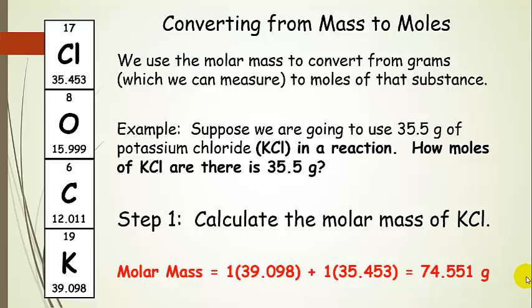Now let's convert from mass to moles — this is something we're going to do a lot of in this course. We can use the molar mass to convert from grams, which we can measure, to moles of that substance. Let's suppose we want 35.5 grams of potassium chloride for a reaction. How many moles is that, and how can we figure that out?